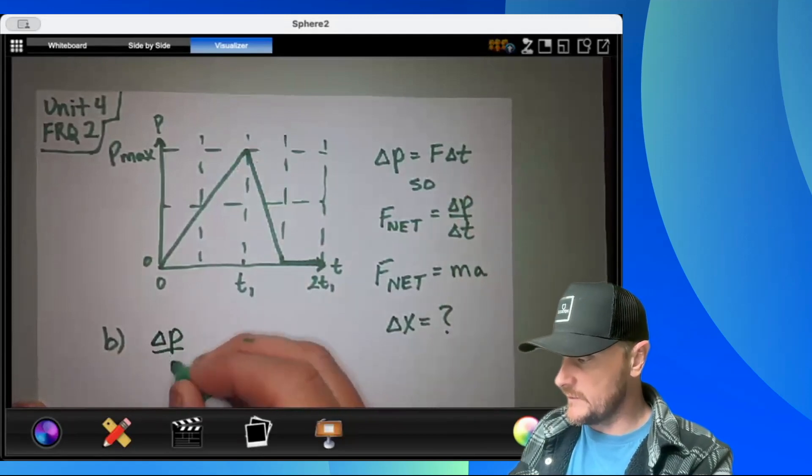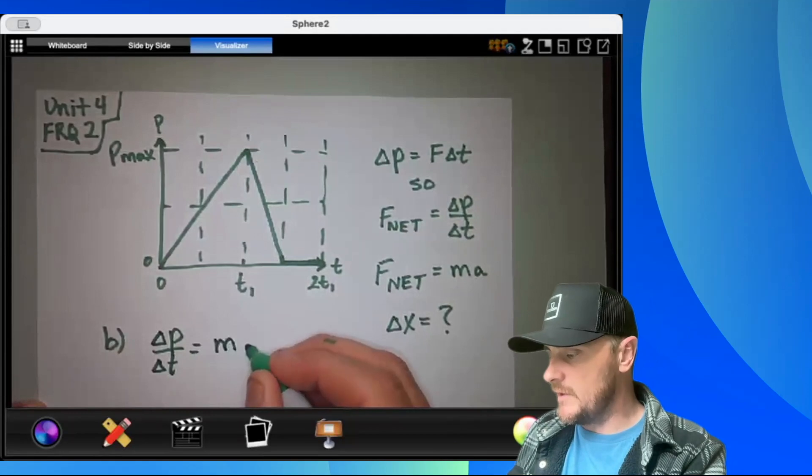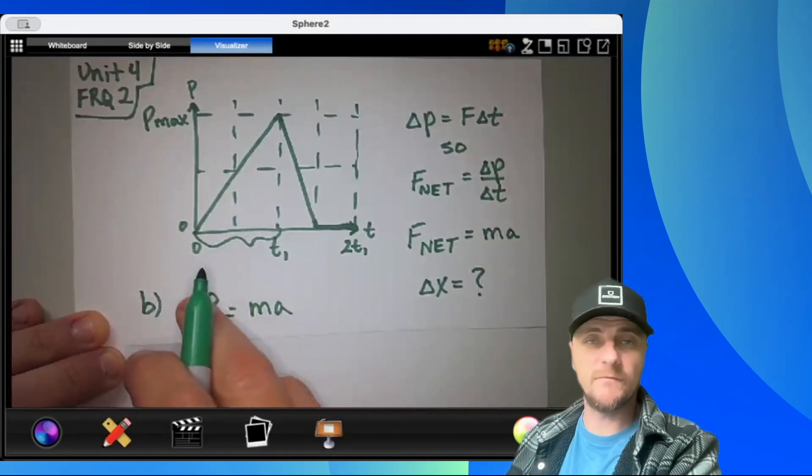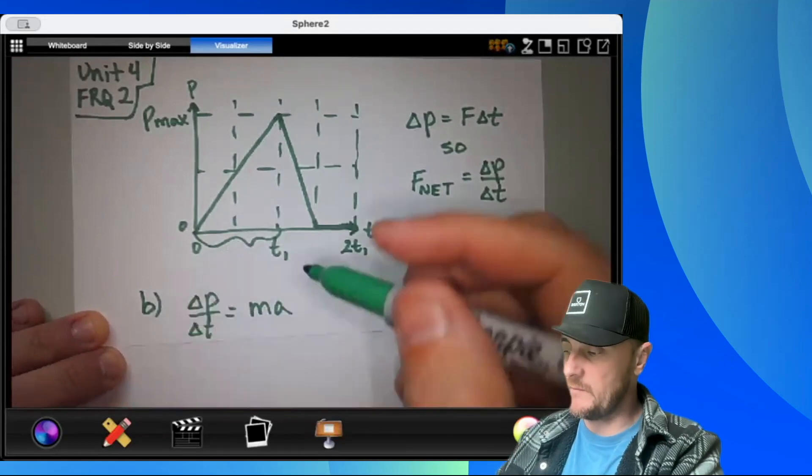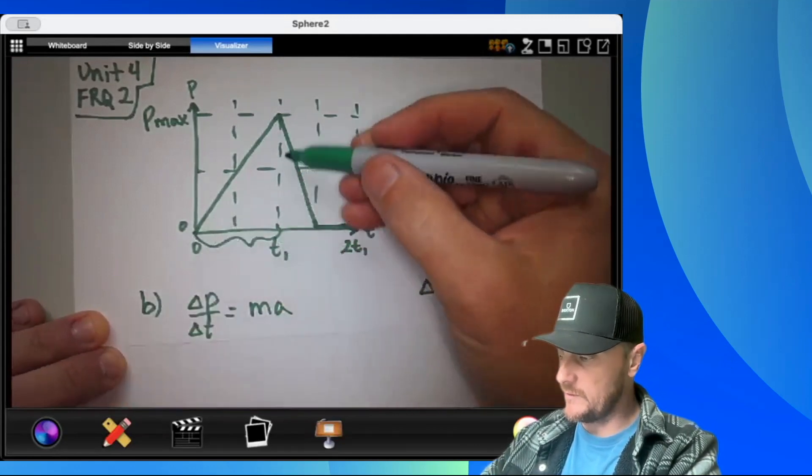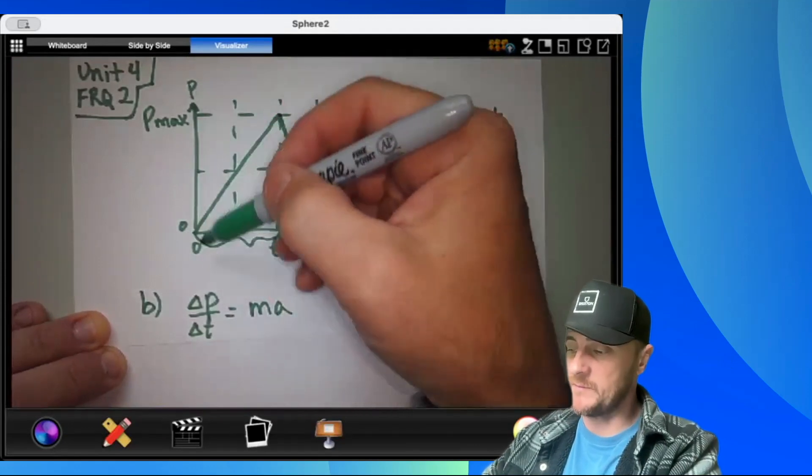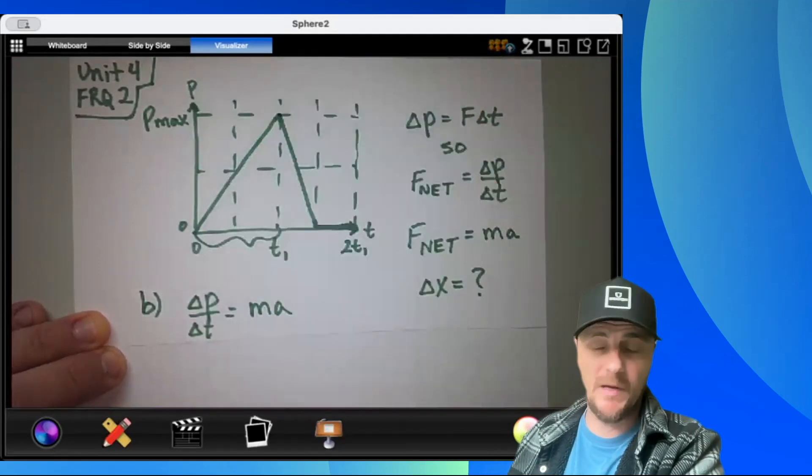Let's combine these two ideas. So I would have delta p over t equals ma. Now I'm going to turn my attention to delta p and delta t. Well, delta p is final momentum minus initial momentum. During this time interval, isn't my final momentum p max and my initial momentum zero? So the subtraction of these would just be p max.